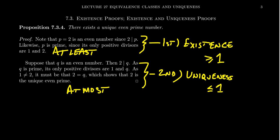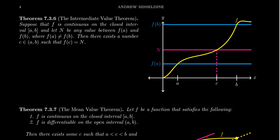Every uniqueness proof has two parts: the existence part shows at least one, and the uniqueness part shows at most one even prime. Previously, we used the well-ordering principle to show uniqueness in the division algorithm and Euclidean algorithm — we got a minimum element and then derived a contradiction, thus giving uniqueness by contradicting the minimality of that element.